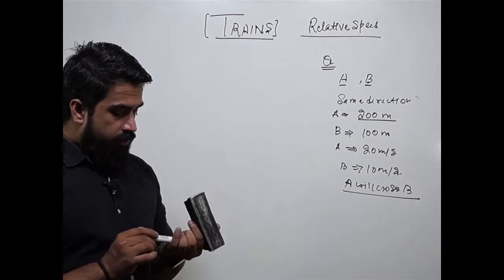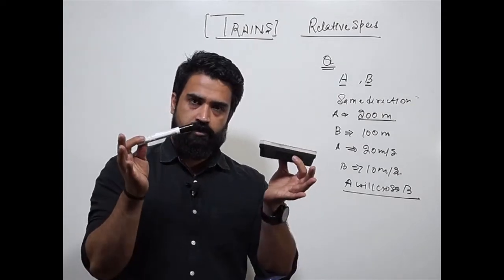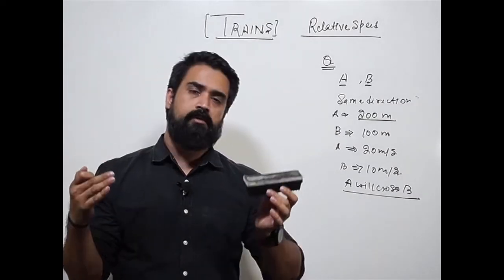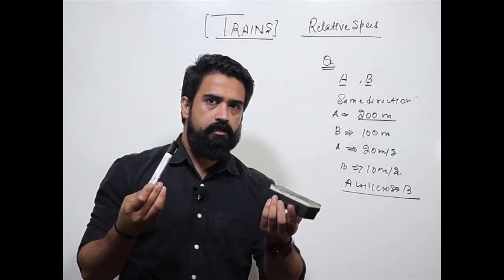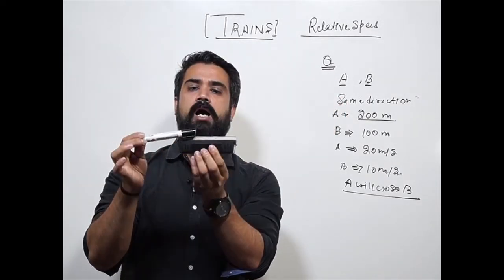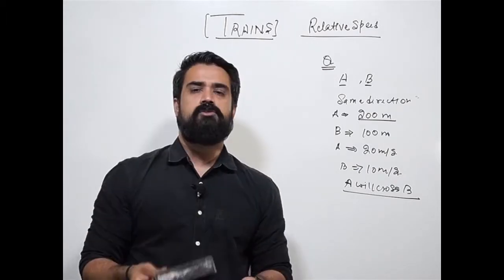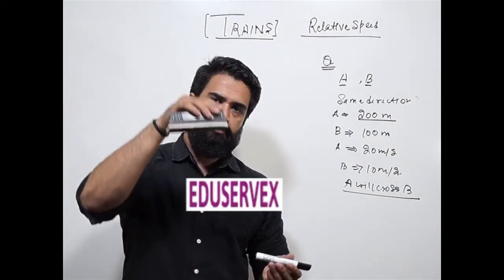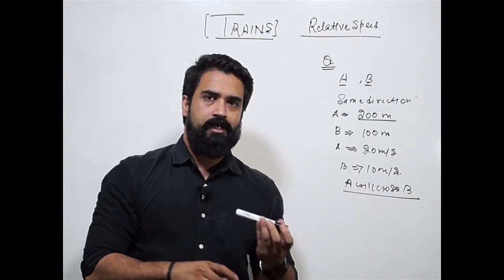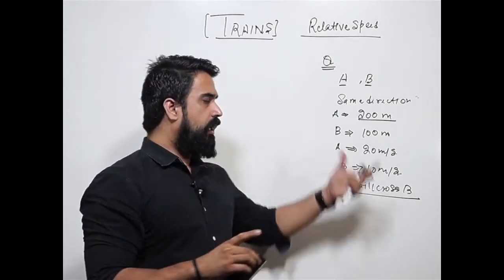I just want to explain with a simple example. We have two trains — this is A, this is B. If they have to cross each other moving in opposite directions, we need not take the distance between them. We just check which train is crossing what. They cross from the same point and cover each other's lengths. If crossing a platform, the distance covered is the train's length plus the platform's length. If crossing a man, the man's length is negligible, so the train covers only its own length.